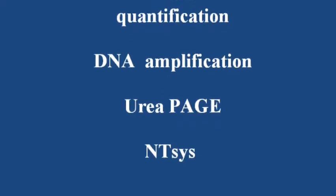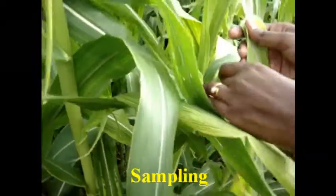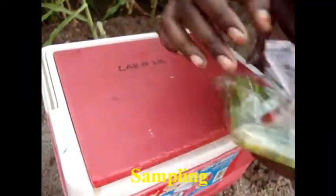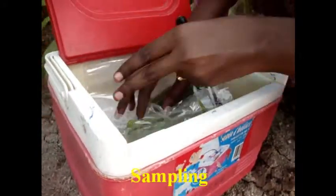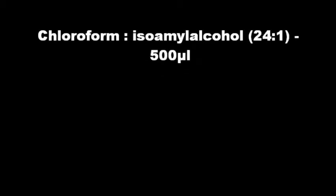The steps involved are: sample collection, DNA extraction, DNA quantification, DNA amplification with SSR marker, urea PAGE, and NTSYS software analysis. For sample collection, young leaf samples are collected for DNA extraction and kept in an ice box. Reagents used for DNA extraction are CTAB, PVP, beta-mercaptoethanol, chloroform, isoamyl alcohol, phenol, chloroform, isopropanol, and sodium acetate.